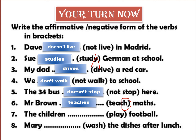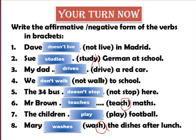Number seven: The children (play) football. Children means many — they hate S — so we leave the verb as it is: The children play football. Number eight: Mary (wash) the dishes after lunch. It's a repeated action. Mary likes S and the verb ends with SH, so we add -ES: Mary washes the dishes after lunch. Thank you boys and girls, see you next time!